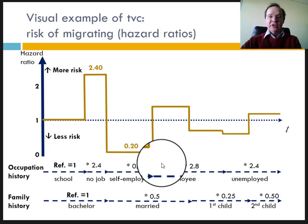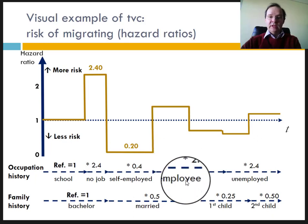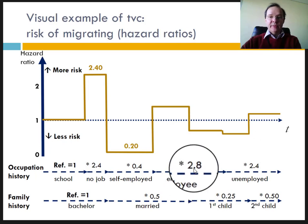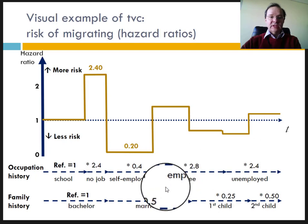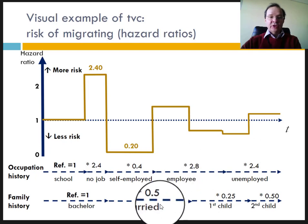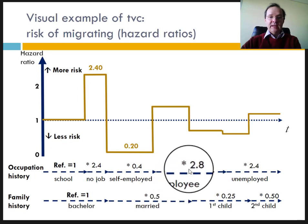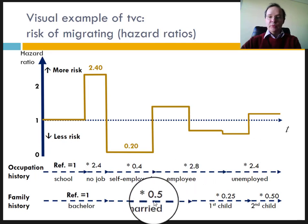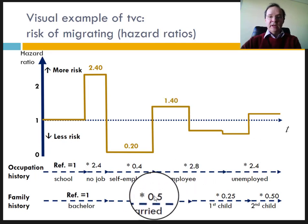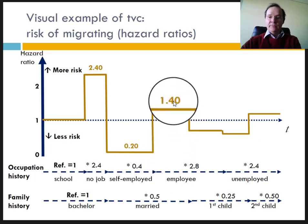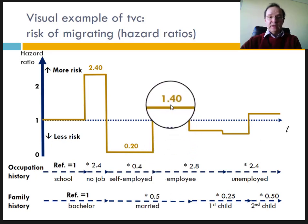However, when she stopped being self-employed to become an employee, her chances of migrating multiplied by 2.8. Considering that she was still married, her chances were multiplied by 2.8 times 0.4, that is by 1.4 as compared to the reference category.